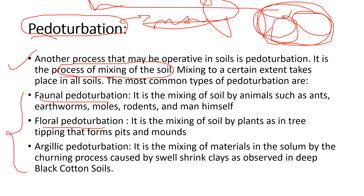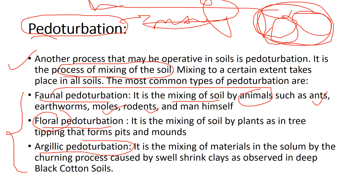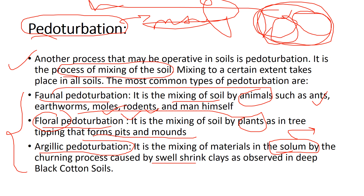Faunal pedoturbation occurs when animals — such as ants, earthworms, moles, rodents, and humans — cause mixing of the soil. Floral pedoturbation occurs when plants, through the formation of pits and mounds, cause mixing. Argillic pedoturbation is the mixing of materials in the solum — the upper part of the soil — by the churning process caused by swelling clays, as observed in deep cotton soils.